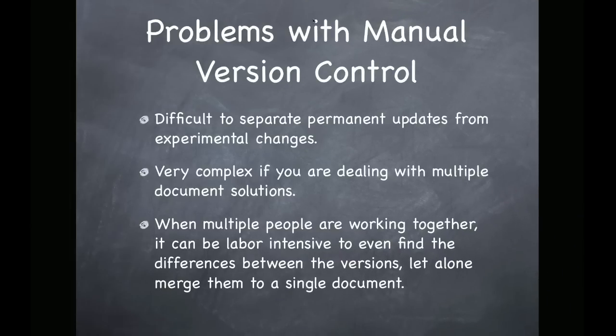Some of the difficulties you experience with trying to do version control manually is that it can be difficult to pick and choose the changes that you want to keep. For example, if you're experimenting with something, you're going to need to have some kind of naming convention so you don't confuse that change with things that you definitely want to keep.